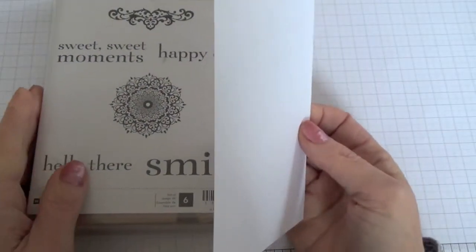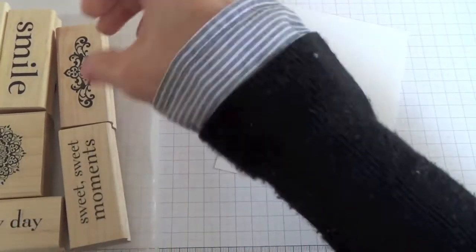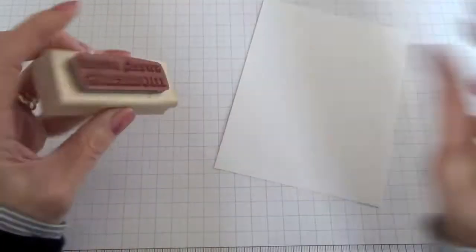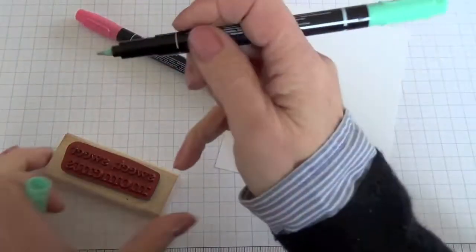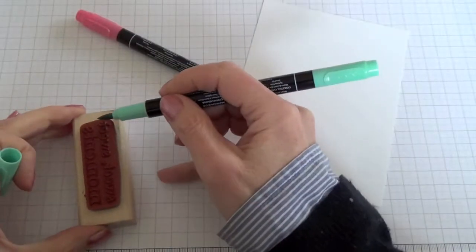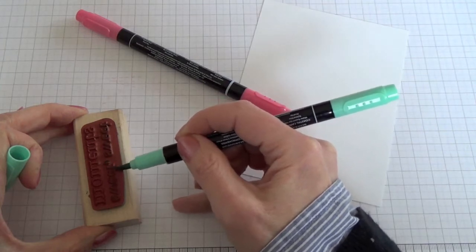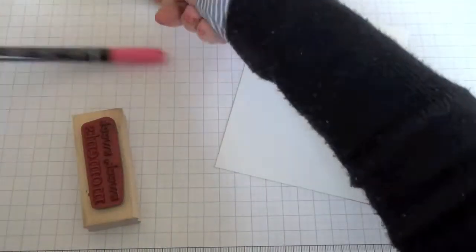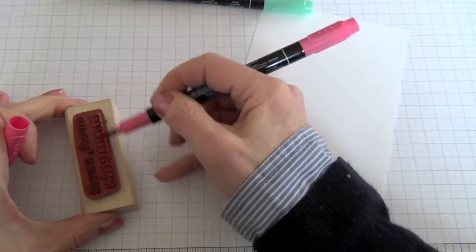Now I need to stamp the label and for that you'll need the Happy Day stamp set and your white cardstock. Now I'm going to use the Sweet Sweet Moments sentiment because I'm going to put chocolates in my box. I'm going to take the Coastal Cabana marker and just colour in the Sweet Sweet, and then take the Strawberry Slush marker and colour in the Moments.